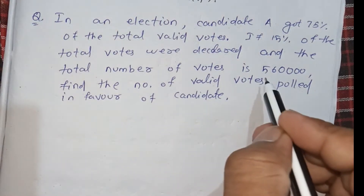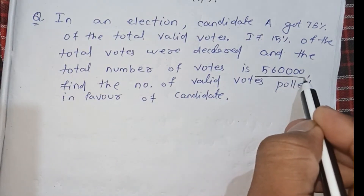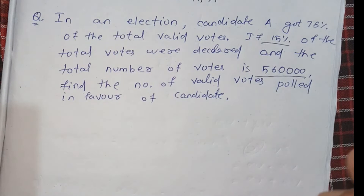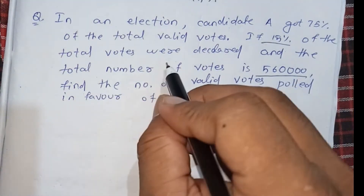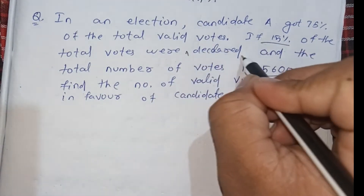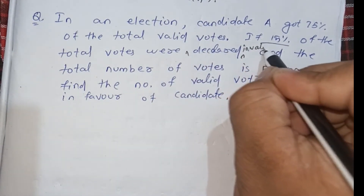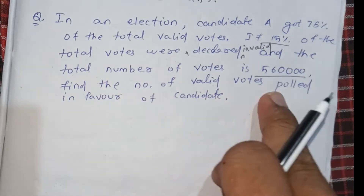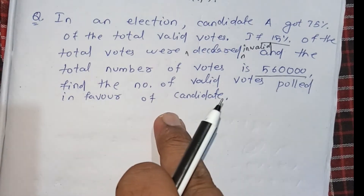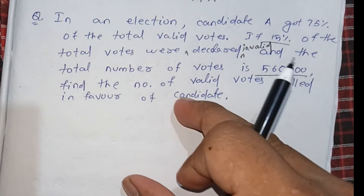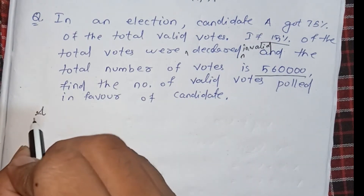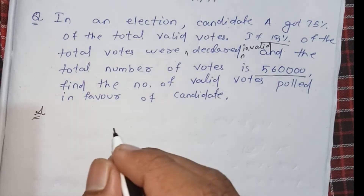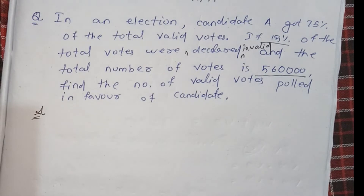If the total votes are 5,60,000 and among which 15% were invalid, you have to find out how many votes were declared invalid. Then, from that, we will find out how many valid votes the candidate got. First, we will find out the total number of valid votes.